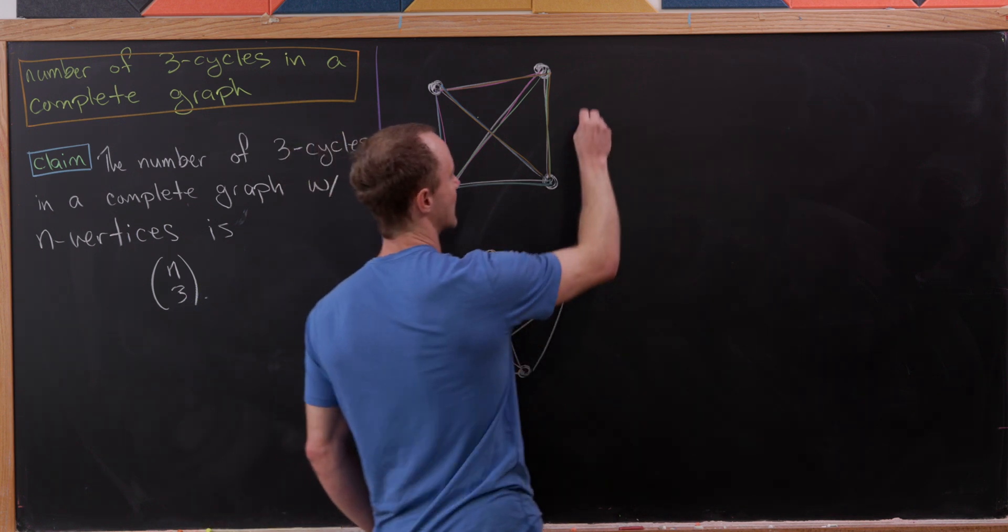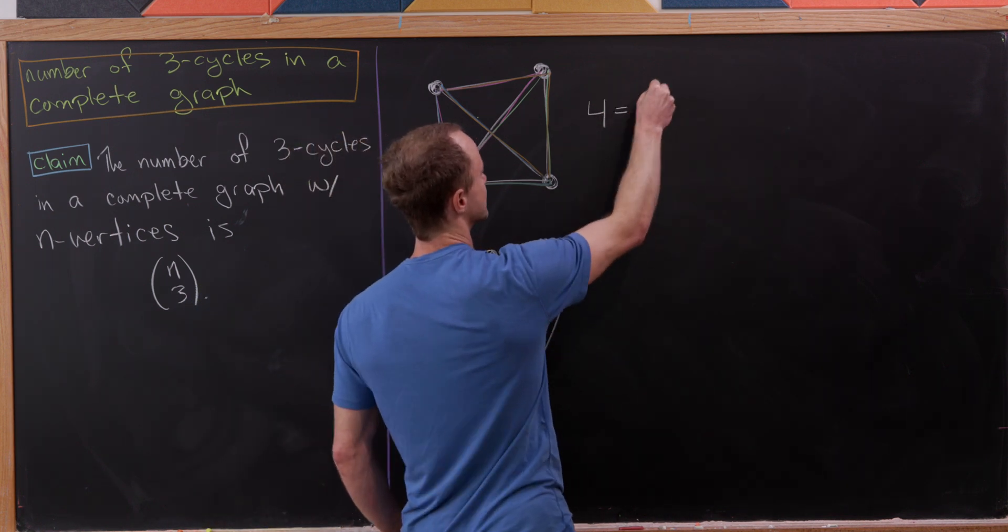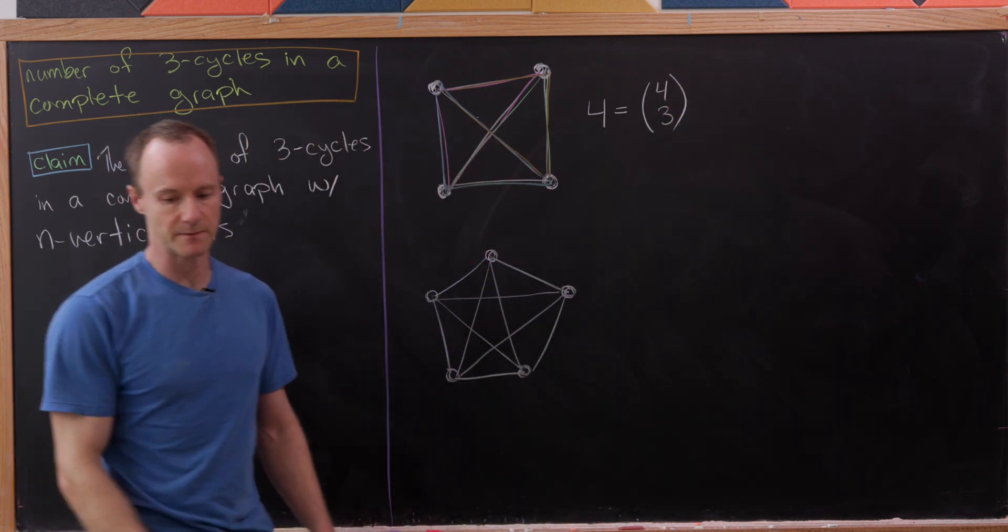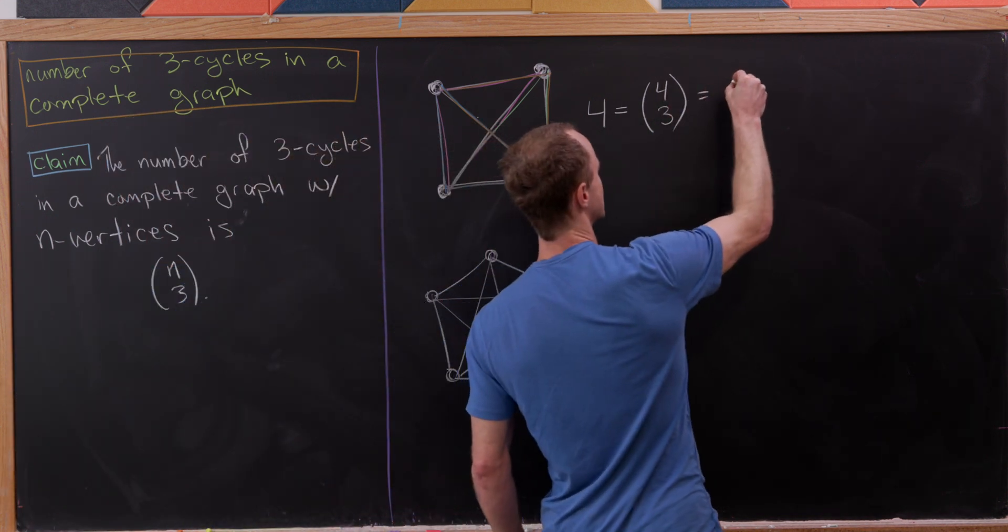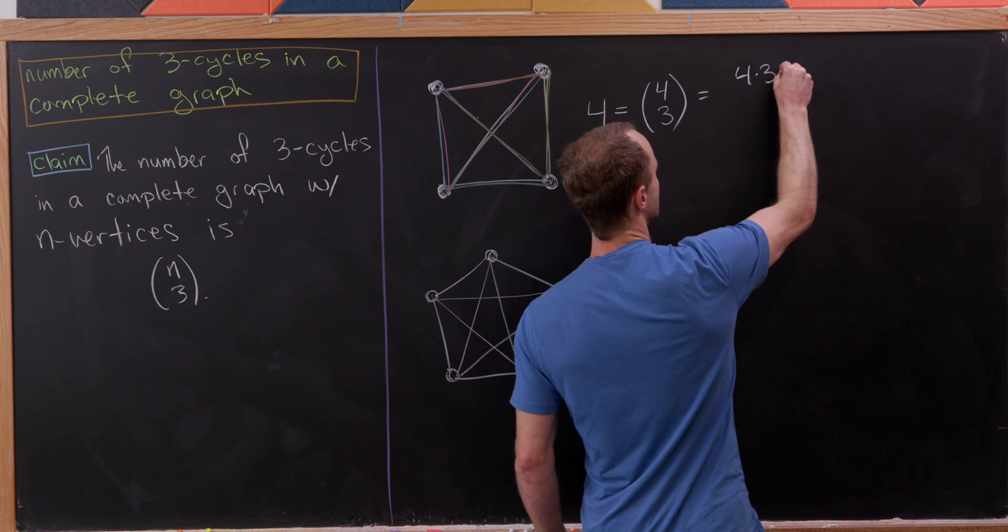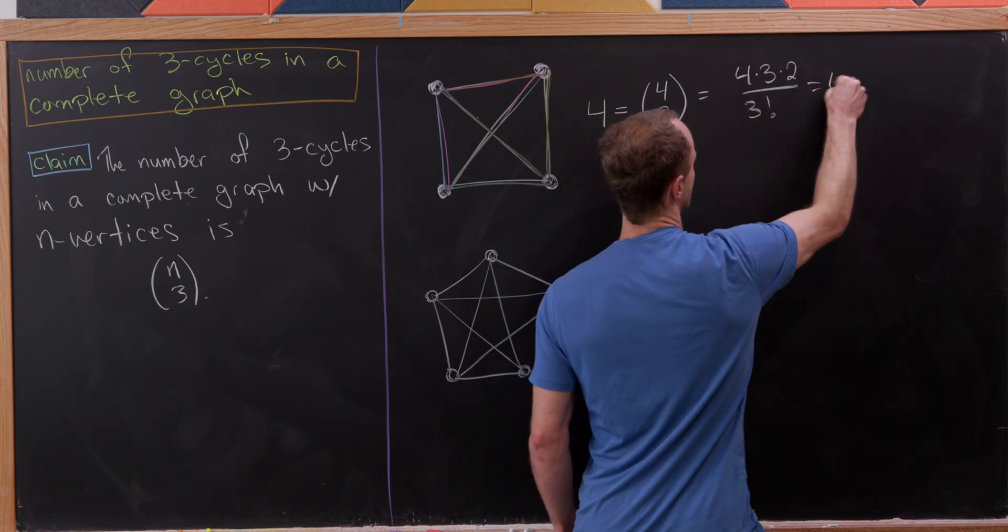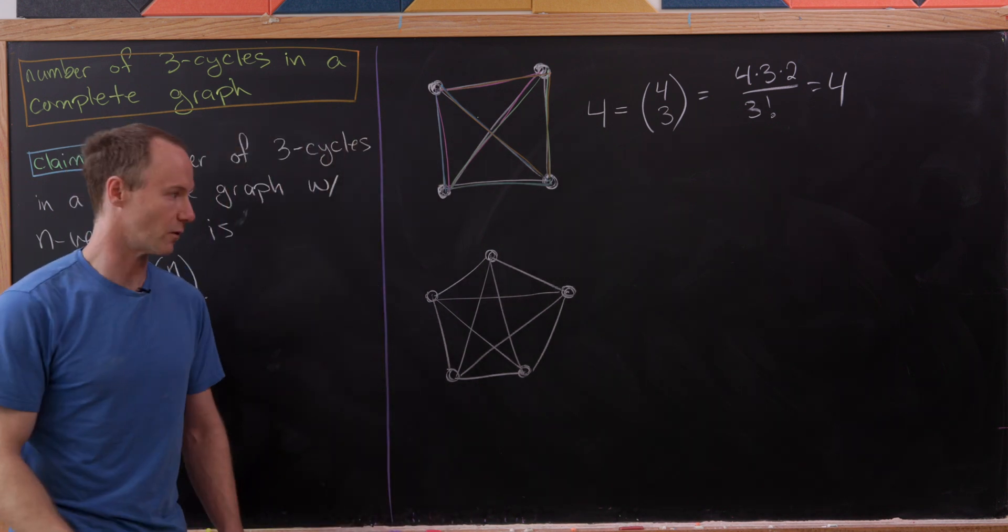So here we've got four total three cycles. But observe that four is the same as four choose 3. Recall that four choose 3 is 4×3×2 over 3 factorial, which clearly simplifies to four.